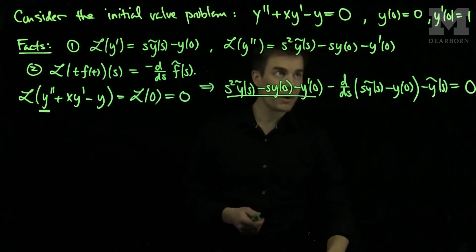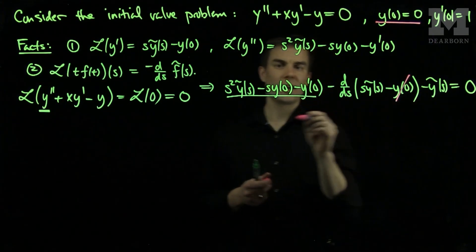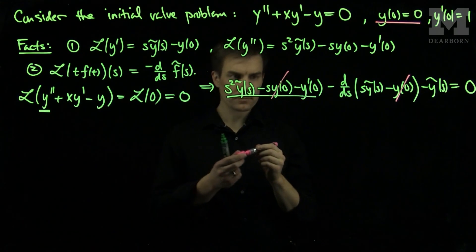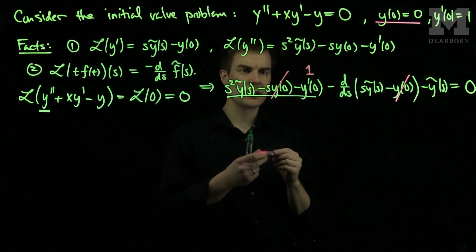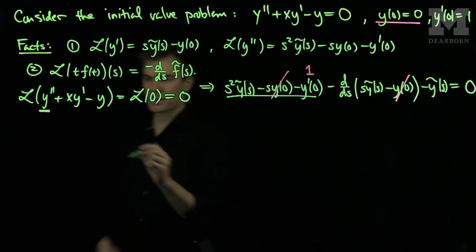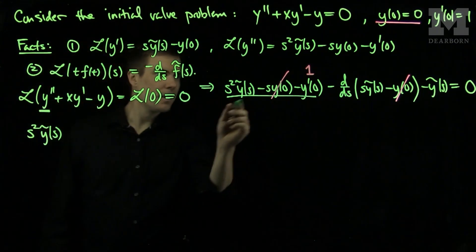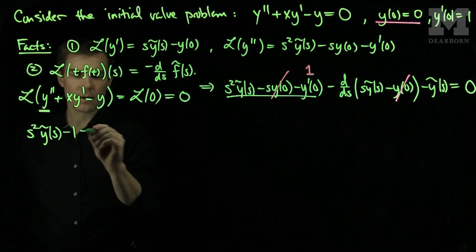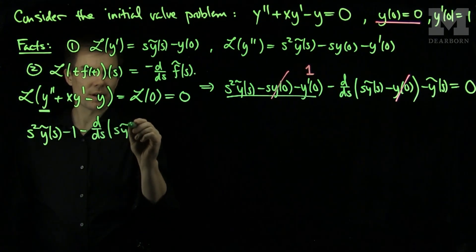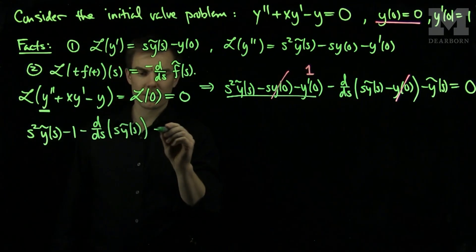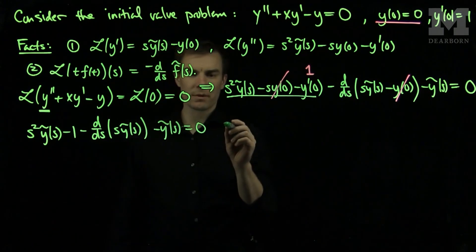Now I will fill in my initial conditions. We know that y(0) = 0, so those terms vanish, and y'(0) = 1, so that term equals one. Simplifying, I will have s squared times the Laplace Transform of y minus one, minus the derivative with respect to s of s times the Laplace Transform of y, minus the Laplace Transform of y, equals zero.